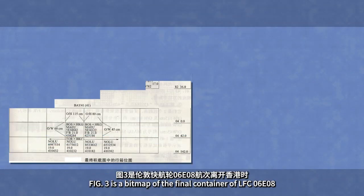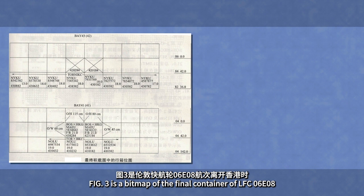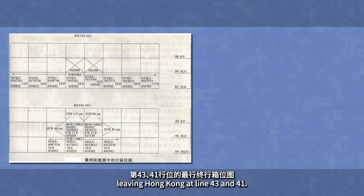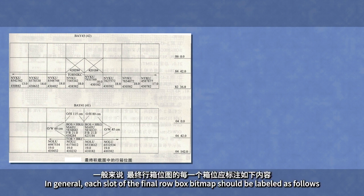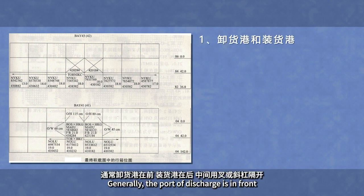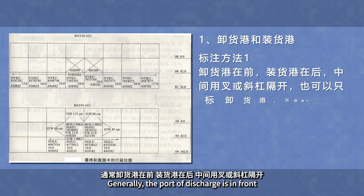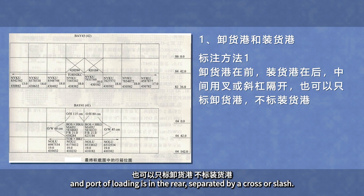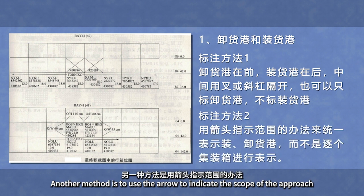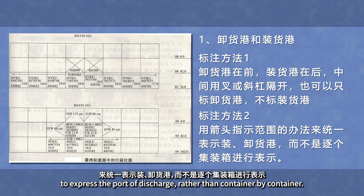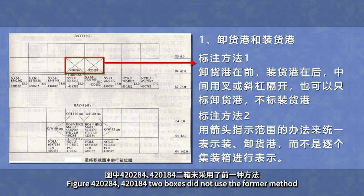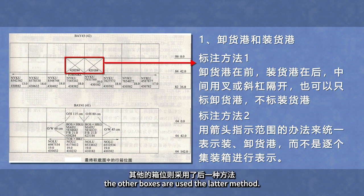第三部分为最终舱位图。这是伦敦快航轮06E10航次离开香港时第43、41舱位的最终舱位图。一般来说，最终舱位图的每一个箱位应标注卸货港和装货港，通常卸货港在前，装货港在后，中间用叉或斜杠隔开，也可以只标卸货港，不标装货港。另一种方法是用箭头指示范围的办法来统一表示装货港，而不是逐个集装箱进行表示。图中420284、420184两箱均采用了前一种方法，其他的箱位则采用了后一种方法。